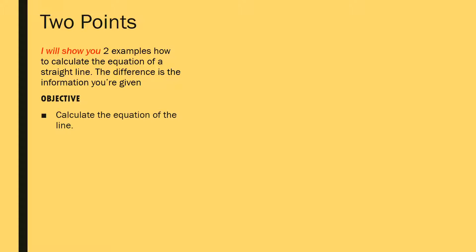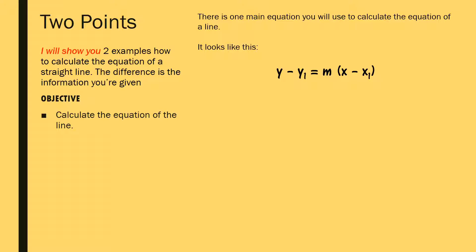I'm going to show you two examples of how you calculate the equation of a straight line. The difference between the two examples is just what information has been given to you. For both examples you'll use one main equation. At GCSE you used y equals mx plus c, but in AS and Maths Methods we use y minus y1 equals m times (x minus x1). You can ask for the proof in class, but otherwise you'll just use that equation.